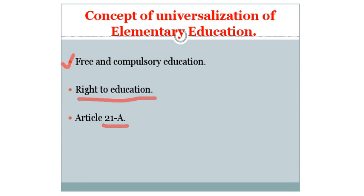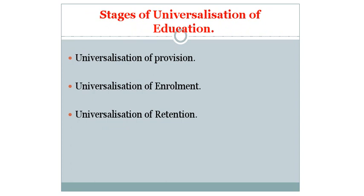Now, the stages of universalization of education. The universalization of elementary education has the following stages. Number 1: Universalization of Provision. It means that school facilities be provided to all children between the age group of 6 to 14 in the country, and that the school should be within walking distance from the home of a child. This is possible only when we open more schools for more children.